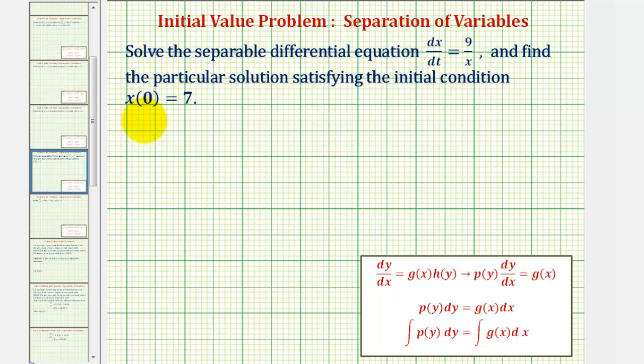Starting with dx/dt equals 9 divided by x, let's write this in differential form or multiply both sides by dt. That would give us dx equals 9 divided by x times dt.